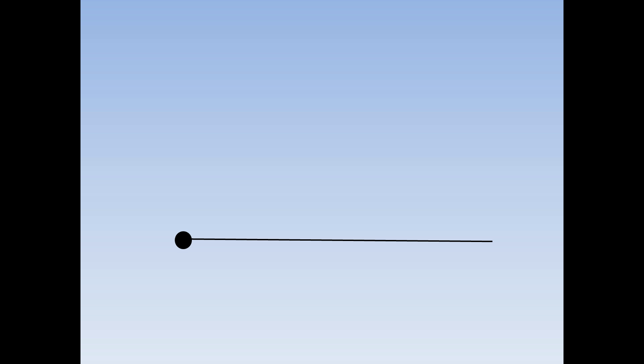Take your compass, put the sharp end on the end of the line and draw a quarter circle. Then, keeping the compass exactly the same, move the sharp end to the place where the quarter circle and the line cross over and draw another quarter circle. Finally, join up the line and the place where the two quarter circles cross over each other.